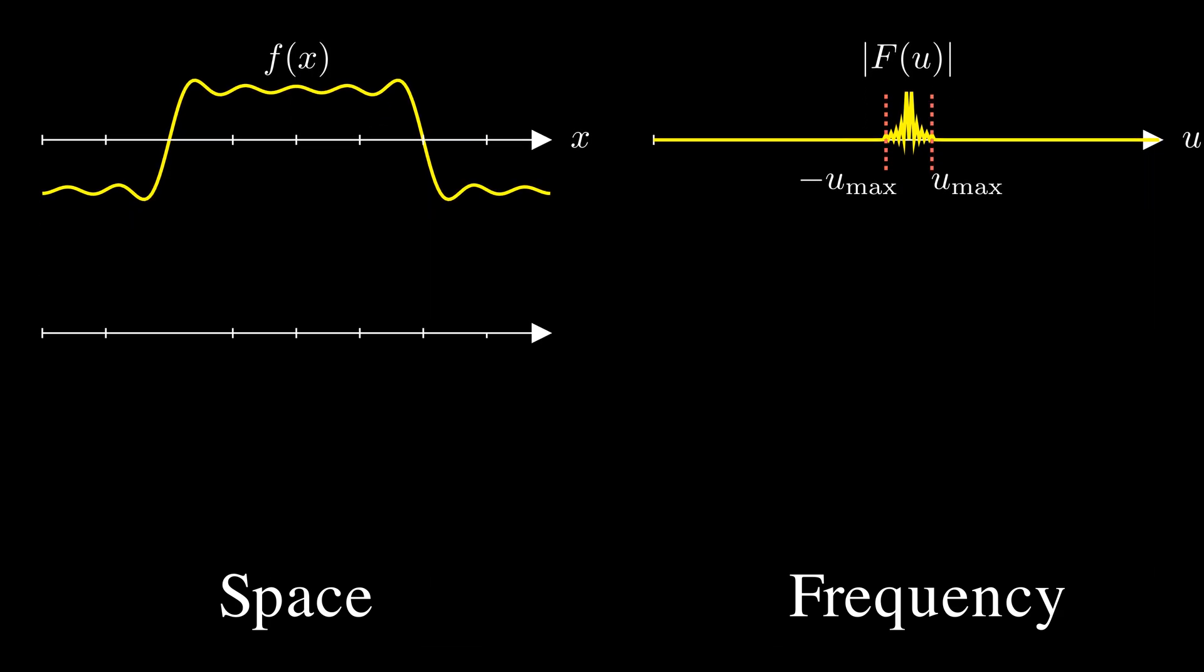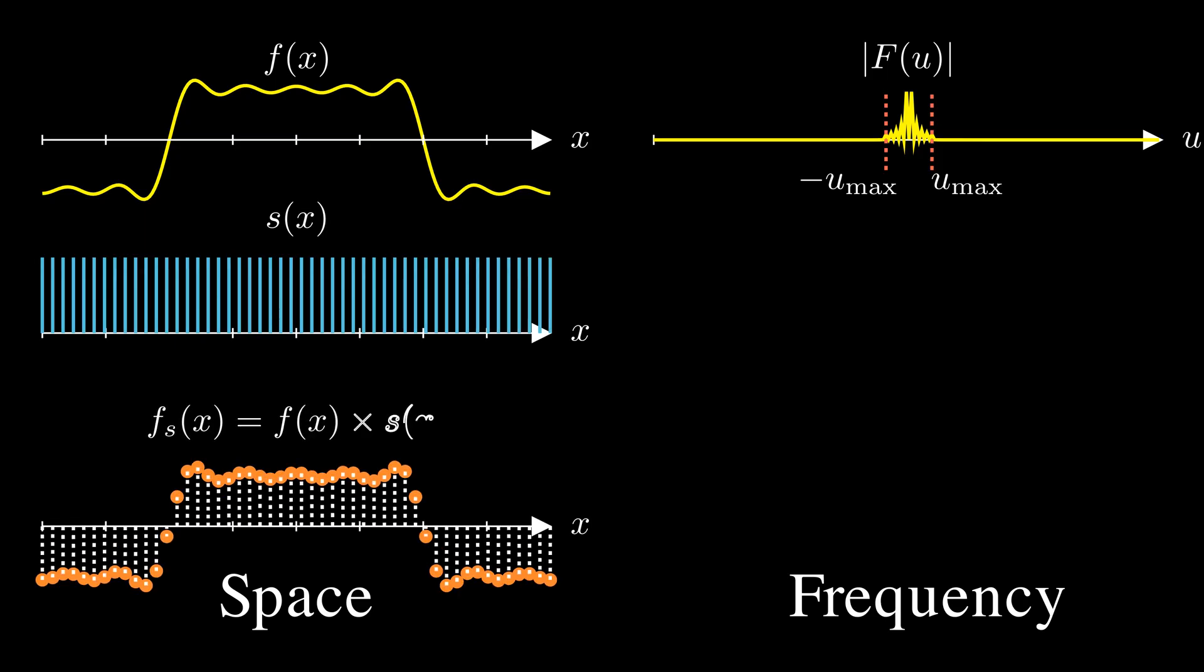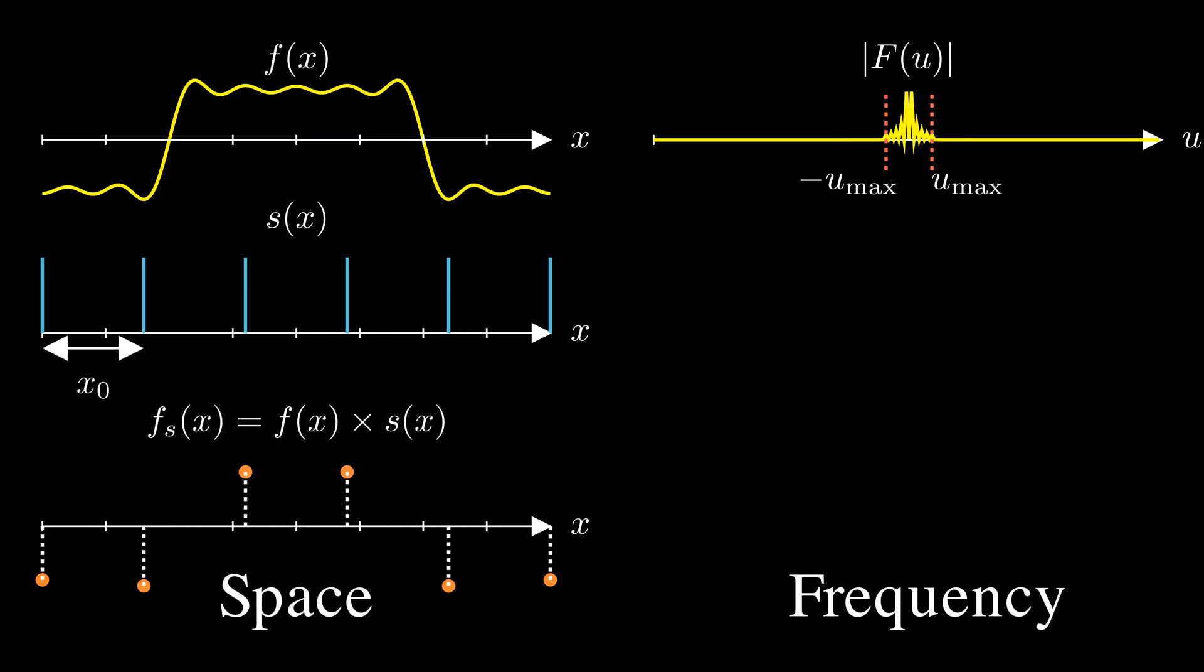Now to digitize this signal, we multiply it with an impulse train, a series of periodic impulses. Adjusting the impulse train's spacing changes the sampling rate.